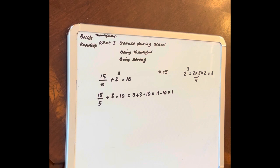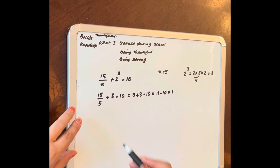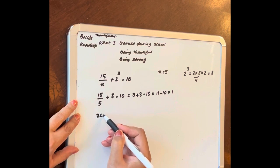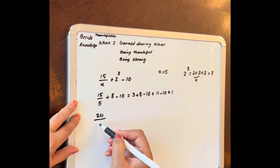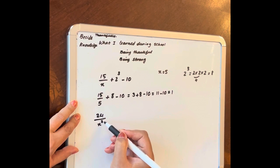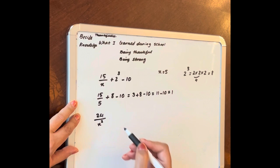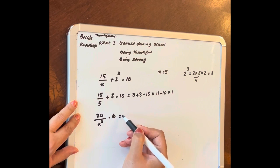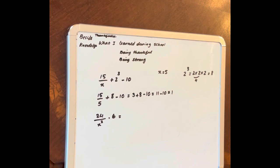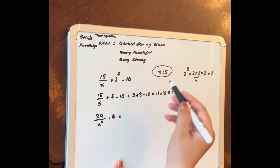Another expression is 24 over x to the power 2 multiply by 6. Again, x is 5.